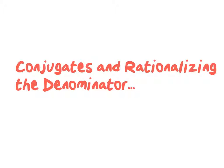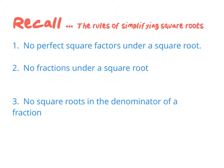Today we're going to cover a topic called conjugates and rationalizing the denominator. We're reminding ourselves of the rules for simplifying square roots. Rule number one: we can't have any perfect square factors under a square root. That's why something like the square root of 16 isn't simplified, because we could evaluate that to 4.